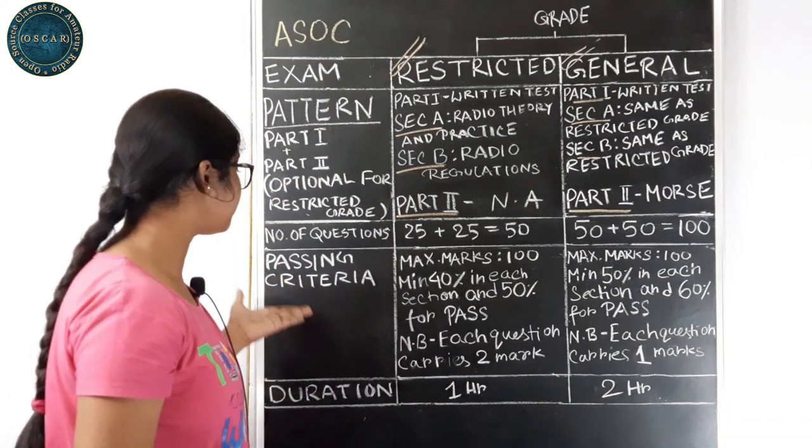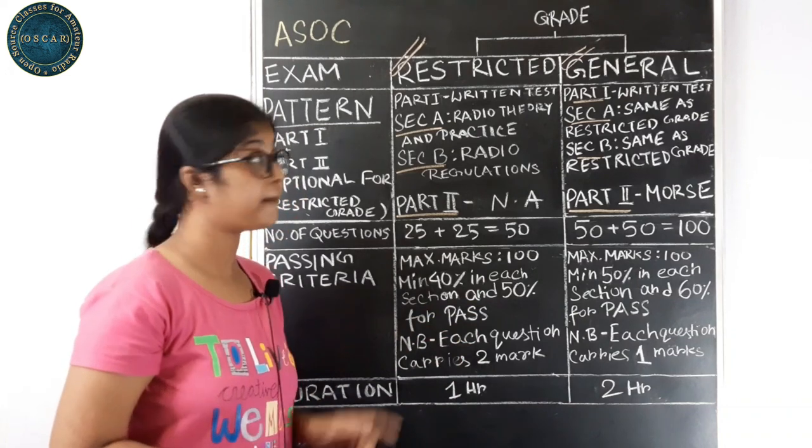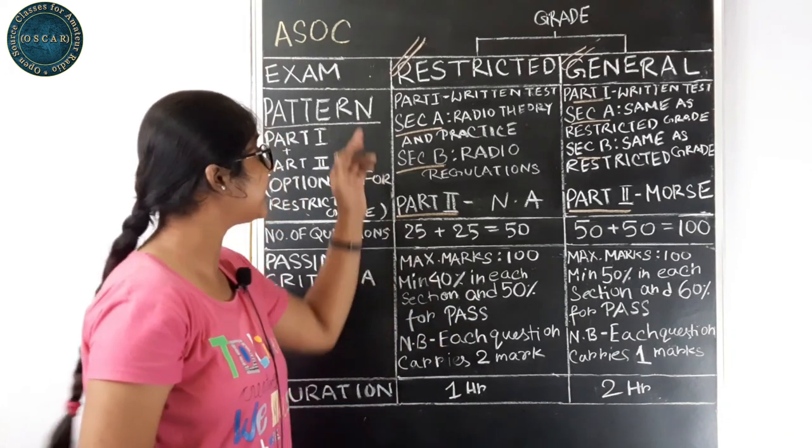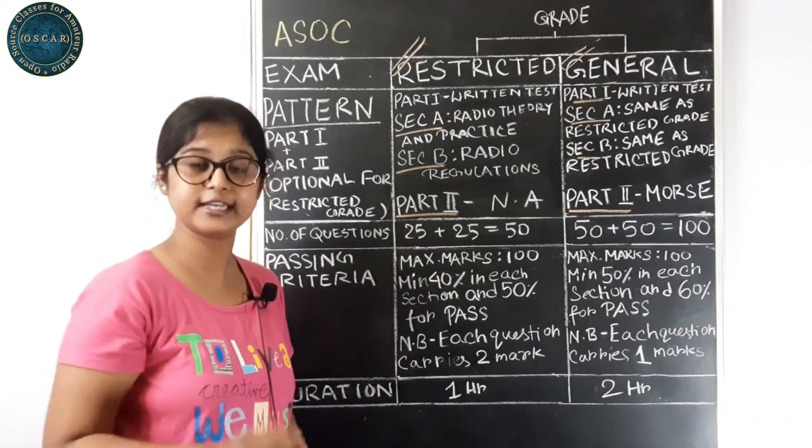Now, let us come to the passing criteria. Maximum marks for both the grades is 100. But in Restricted Grade, you have to score minimum 40% in each section. And overall, you have to score 50% to pass.